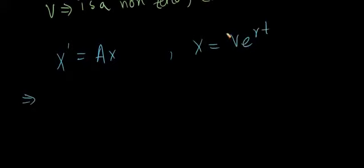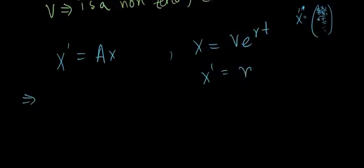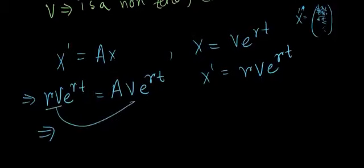X prime will be — since V is a constant column vector, R is just a number, and T is the independent variable — taking the prime means differentiating element-wise. Since V is constant it stays, and only e to the power rt gets differentiated, giving an R out front. So X prime equals R V e to the power rt. Setting this equal to AX, where X is V e to the power rt, and noting that e to the power rt is not zero, we can factor it out.